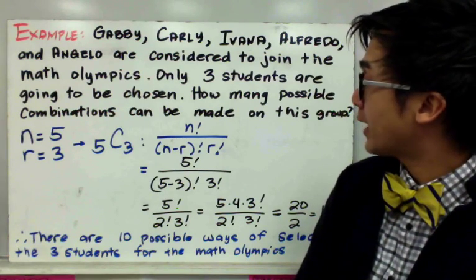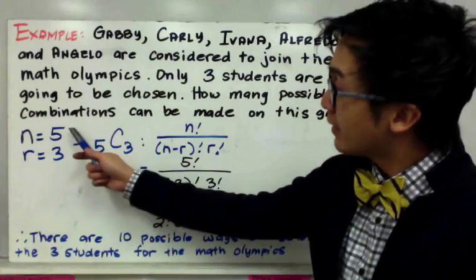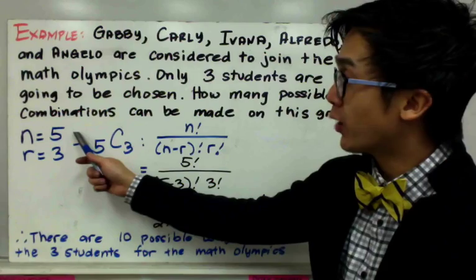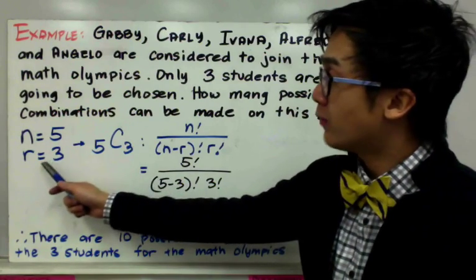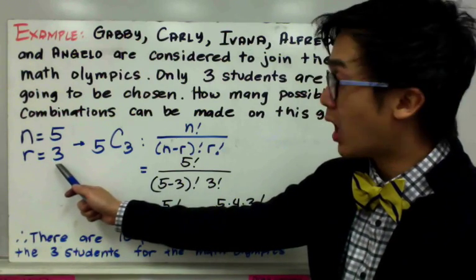N in this problem will be 5 because there are 5 students being considered to join the Math Olympics. However, only 3 of them can go, so that will be our r.